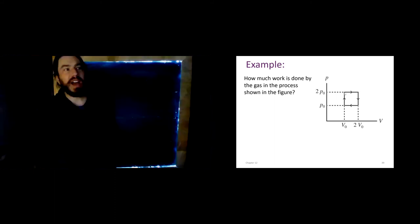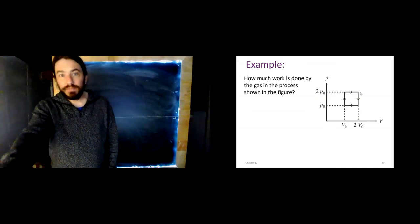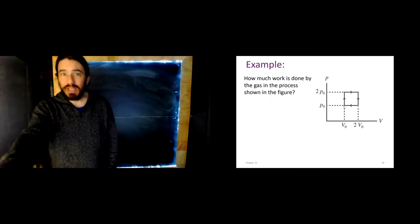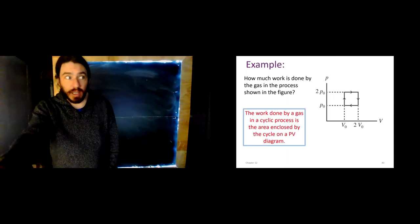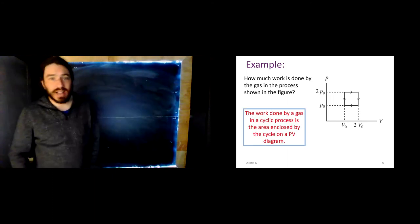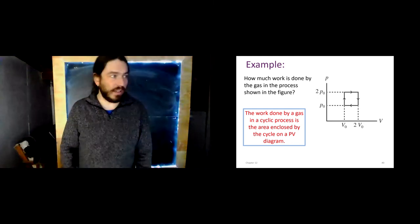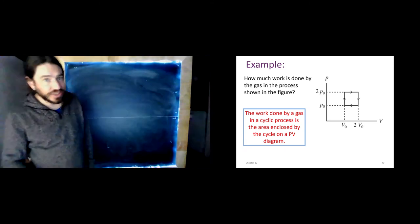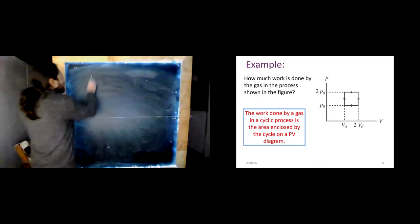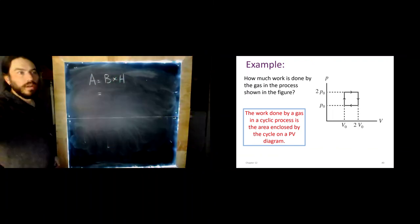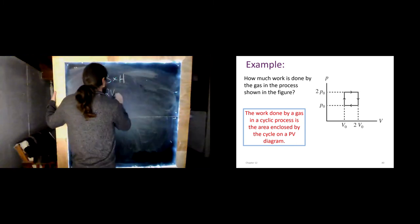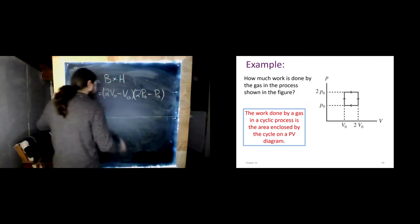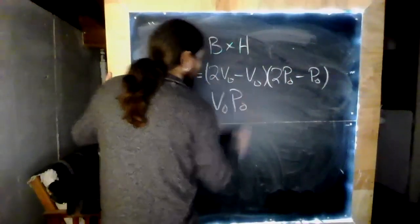So, we could do that. And then, here we see we would have positive work done here by the gas. No work here. Negative work done here. So, we could do that in four pieces and add them all together. And we would get the right answer. But, the work done by a gas in a cyclic process is always the area enclosed by the cycle on a PV diagram. And so, all we need to do is find the area of that shape. Now, the area of any rectangle is just base times height. So, we'll start there.